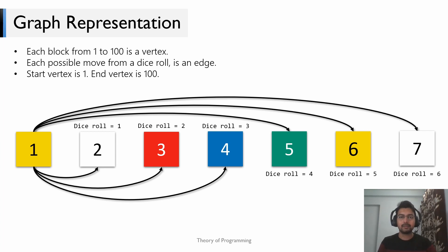Now that we have a basic definition of our graph, we can rephrase our initial problem statement. Our initial problem was to find the shortest path to finish the game. We can rephrase it as: find the shortest path from vertex 1 to vertex 100, since we always start at vertex 1 and the game is finished when we reach vertex 100. This graph is an unweighted graph, which means when we apply BFS it will give us the shortest distance between any two vertices.